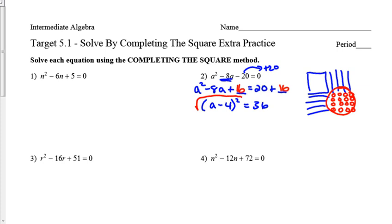This then is a really easy square root problem. And when you square root both sides, you get a minus four, and you get positive and negative six. So to solve then, we're going to add four to both sides. And a is, let's see, positive six plus four, that's ten. And negative six plus four, that's negative two. So those are our two answers.